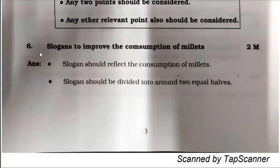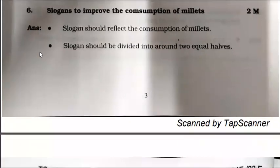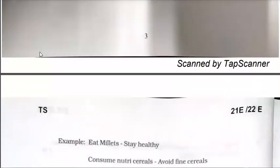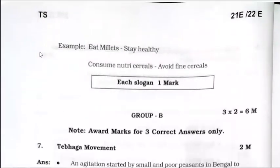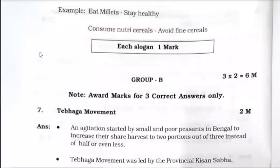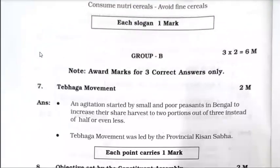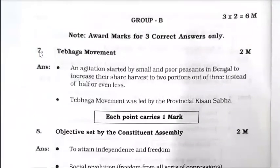For slogans to improve the consumption of millets, you have to write a slogan and each slogan carries 1 mark — an example is also given. Group A is over. Out of 6 questions, if you wrote 3 with proper answers, you will get 6 marks. Marks are awarded for 3 correct answers only.